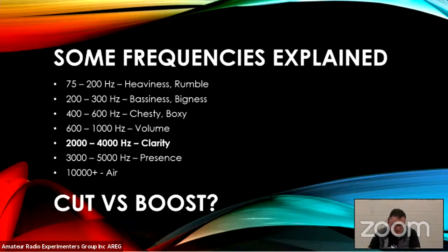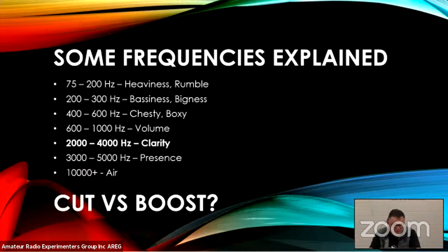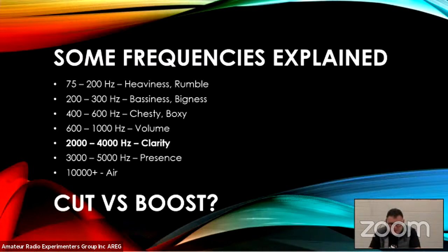Now a brief explanation of voice frequency ranges and what they mean. 75 Hz to 200 Hz is your heaviness and rumble. 200 to 300 Hz is your bass and sense of bigness. 400 to 600 Hz is chesty and boxy. 600 Hz to 1 kHz is volume. The most important one for me is 2000 to 4000 Hz, which is clarity. 3 to 5 kHz is presence, and 10 kHz is the airy sound.